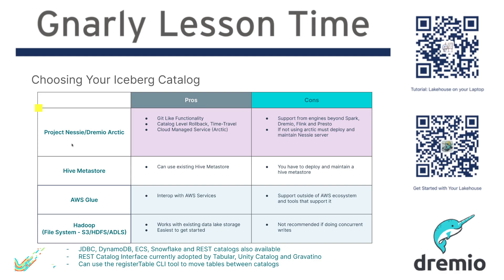The pros are: you get that Git-like functionality, catalog-level rollback, time travel, and multi-table transactions. There is also a cloud managed service, formerly known as Dremio Arctic, which is now Dremio's integrated catalog — part of the Dremio suite of lakehouse management features. If you want the managed service, that's available, but Project Nessie itself is open source. So you can deploy your own Nessie server if you don't want to use Dremio's integrated version.